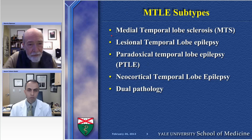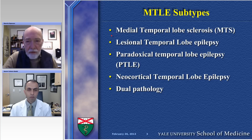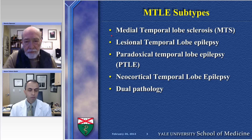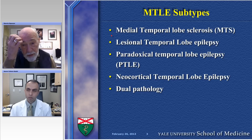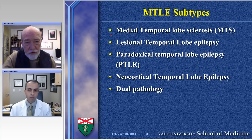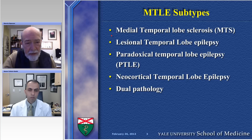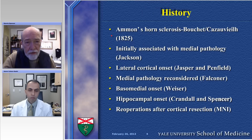Moving from the substrates to the medial temporal lobe epilepsies: sclerosis is the most common pathological substrate. There are also the lesionals, which would be tumor, developmental, or vascular, and they often may lead to what we've coined paradoxical medial temporal lobe epilepsy. By that we mean, if we wind up recording from invasive monitoring — electrodes in the hippocampus — we may record seizures actually beginning in the hippocampus, but in the setting of other pathologies or a normal volumetric hippocampus. We may see this in tumors or in dual pathology, most commonly in the developmental or cortical dysplasia patients.